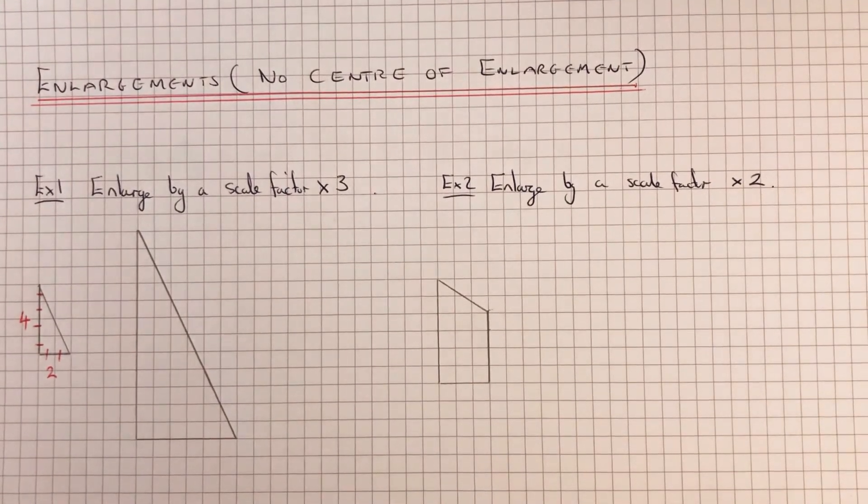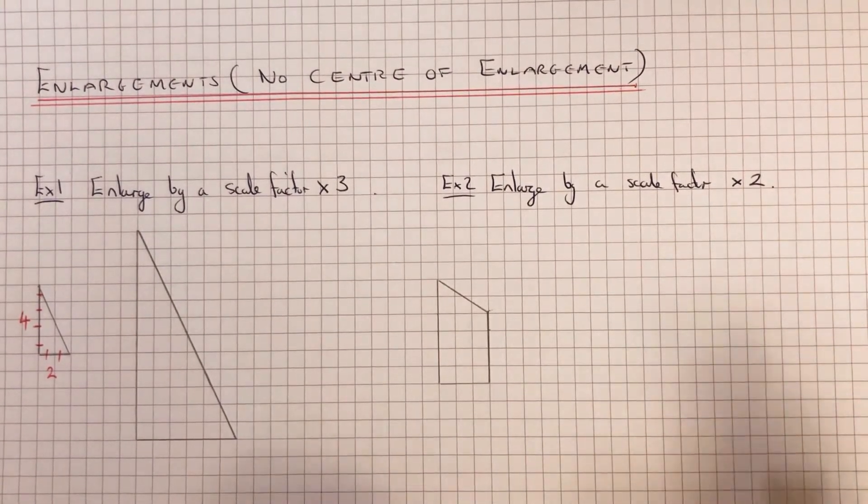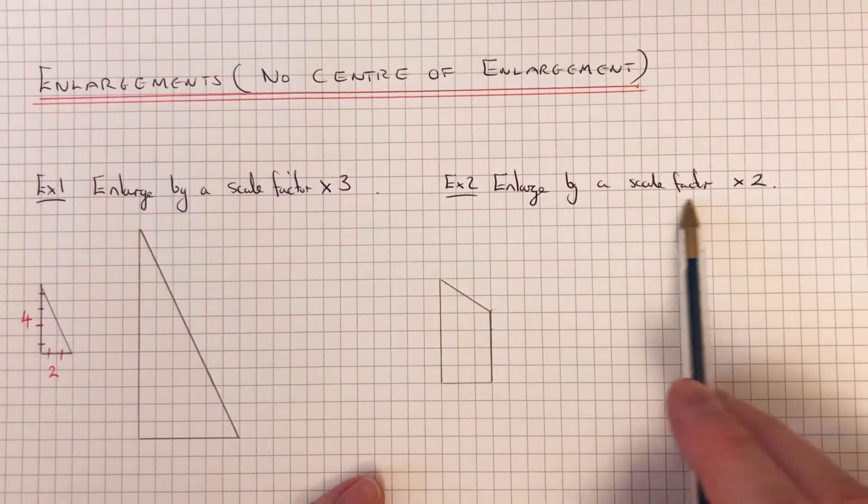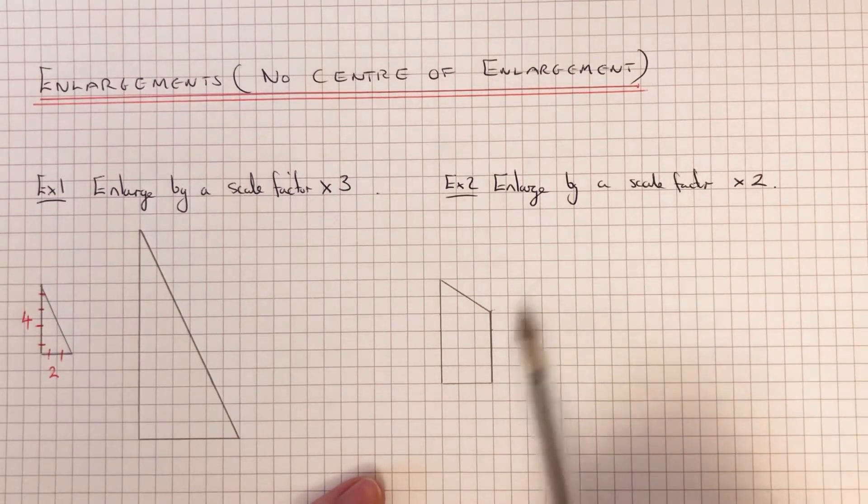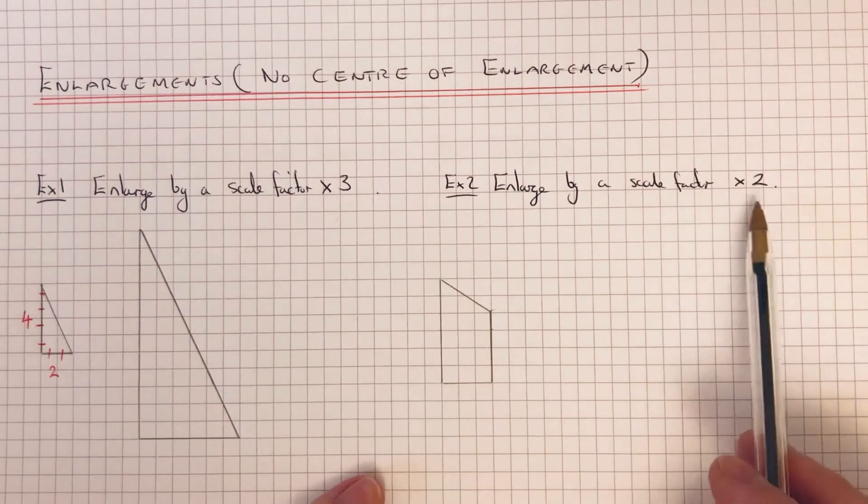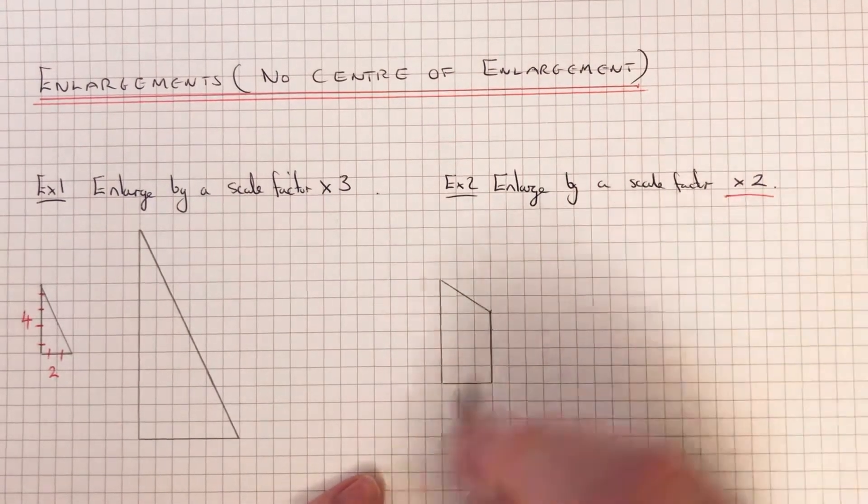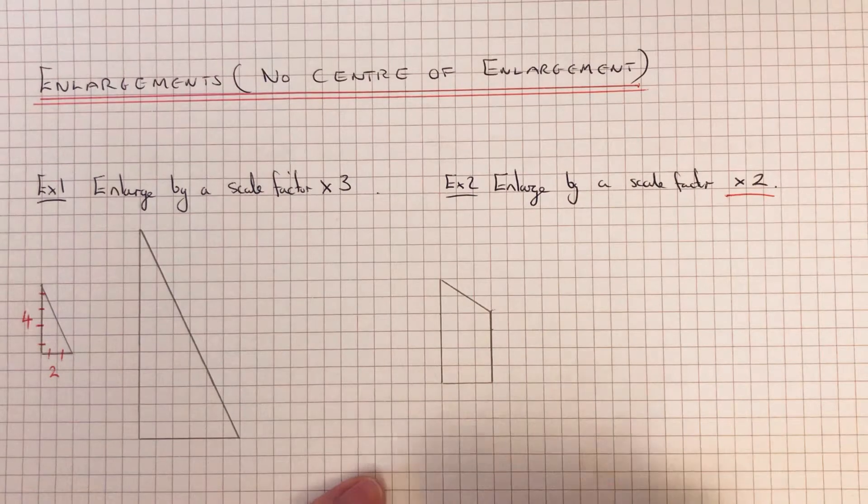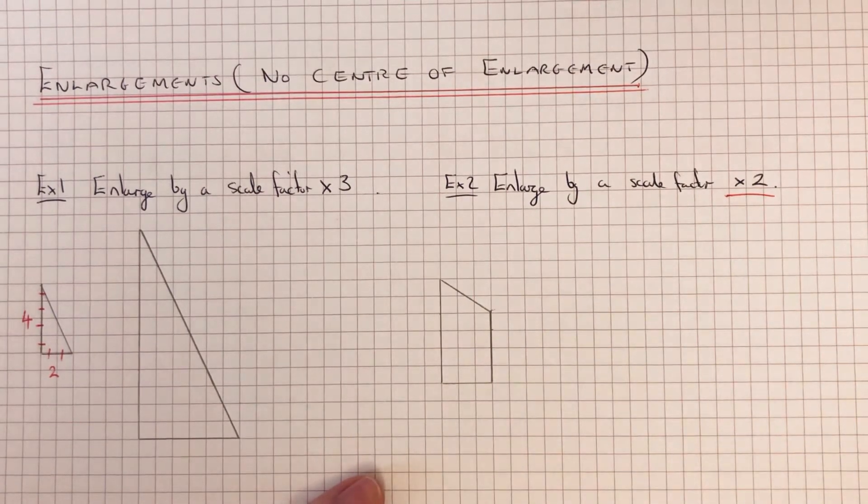So let's have a look at our second example. We've got enlarge by a scale factor times 2. This time we've got a quadrilateral. So we need to make all the sides twice as long. Again, let's start off with the horizontal and vertical lines.